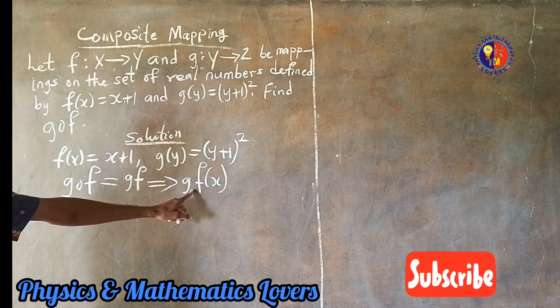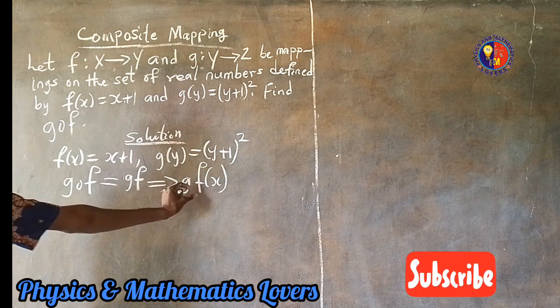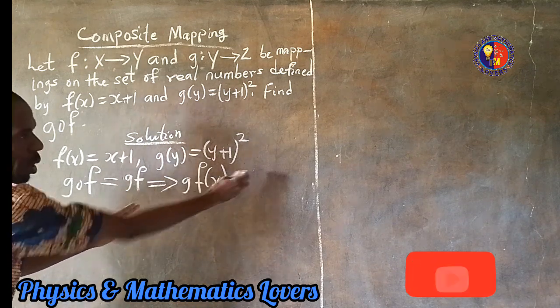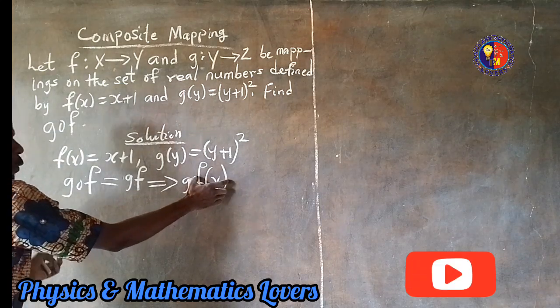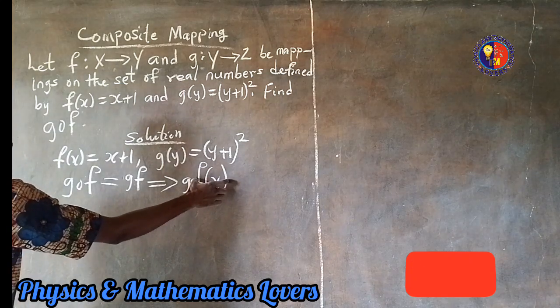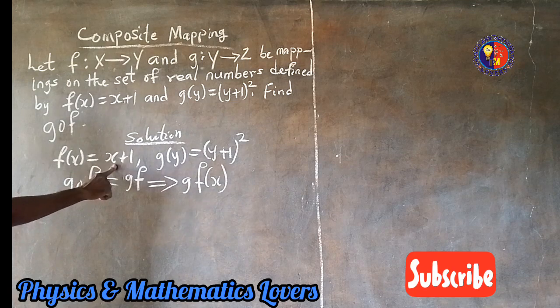Whatever we do now, this g will be outside now. Then f(x) will be inside. Meaning that we are going to bring in the value for f(x). What is the value for f(x)? Look at it here. x plus 1.